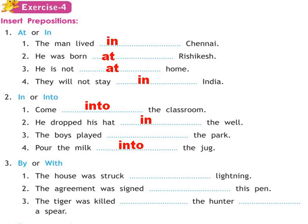Next is 'by' or 'with'. The house was dashed with lightning. We use 'by' with a person or a doer, and 'with' is used with an instrument. Now lightning is not an instrument, that's why we will use 'by' here. The agreement was signed dashed this pen — pen is an instrument, so we write 'with'. The tiger was killed by the hunter and with a spear — spear is a tool used for hunting, so we write 'with a spear'.